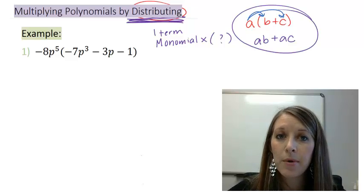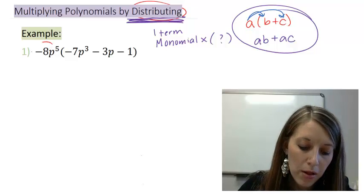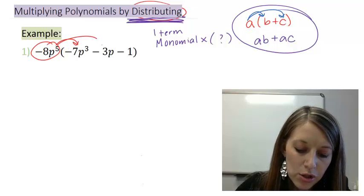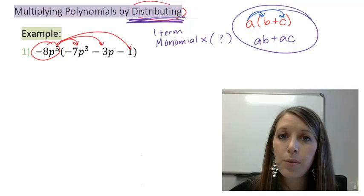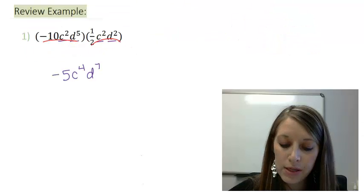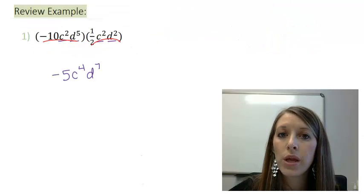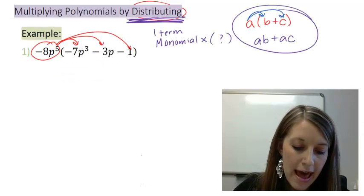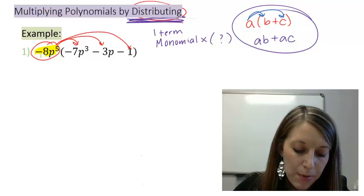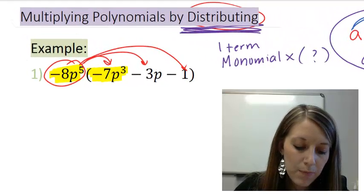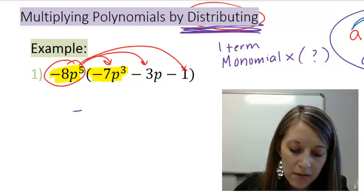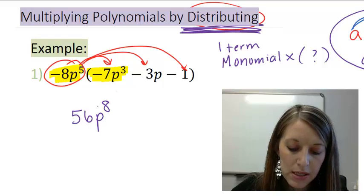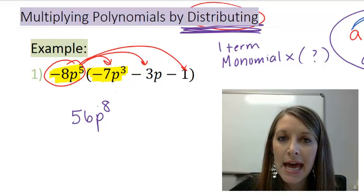So in this example, I'm going to take my monomial or my one-term polynomial of negative 8p to the fifth, and I'm going to distribute it through. First, I have negative 8p to the fifth times negative 7p cubed. Negative 8 times negative 7 gives me 56. p to the fifth times p to the third gives me p to the eighth because I just add the exponents.